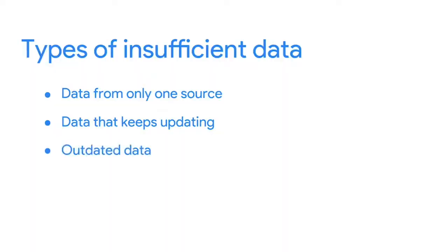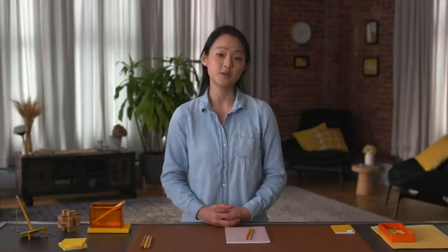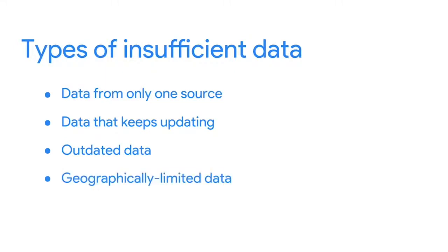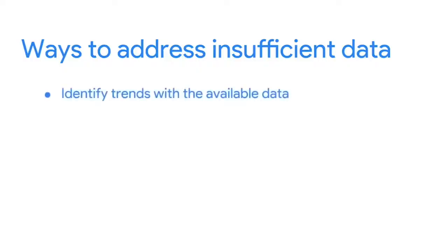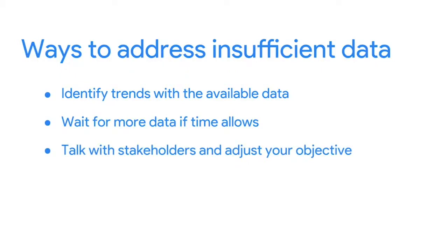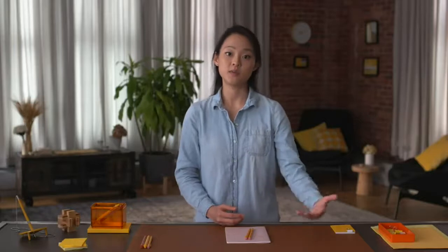On the other hand, your data could be older and no longer relevant. Outdated data about customer satisfaction won't include the most recent responses, so you'd be relying on ratings that might no longer be accurate. Data that's geographically limited could also be unreliable — if your company is global, you wouldn't want to use data limited to travel in just one country. You can identify trends with available data, talk with stakeholders to adjust your objective, or look for a new dataset.